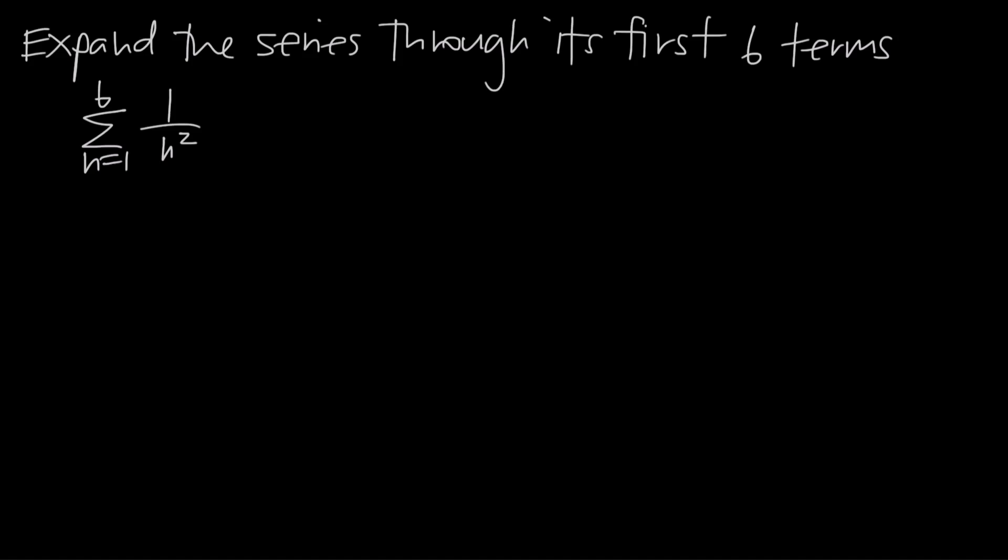In this series we're talking about how to expand a sum through its first few terms. We've been given the series 1 over n squared. So this value right here is our series, and often times we write our series as a sub n. So we could say the series is a_n, and a_n is equal to 1 divided by n squared. So that's our series, the function that defines our series.